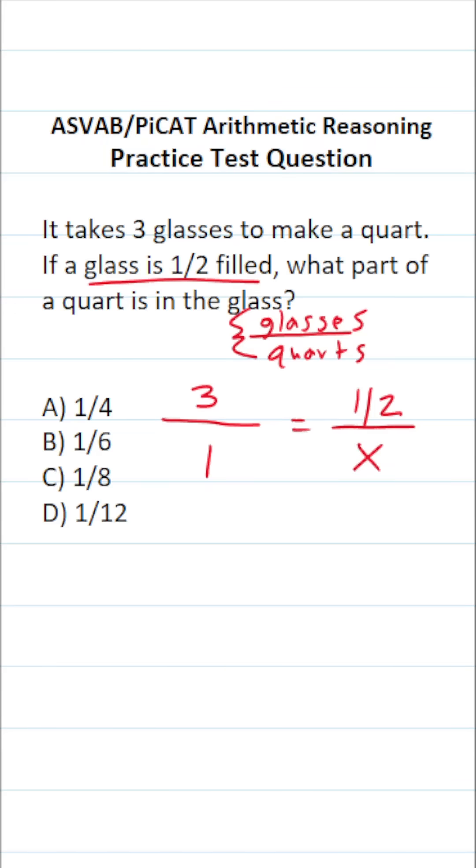We solve proportions via cross multiplication. This becomes three times x equals one times one half. Anything times one is itself, so this is just one half. To clear this three in front of this x, I'm going to multiply it by one third. I'm going to do that to both sides of this equation. Three times one third is just one, so this goes away, leaving you with x on this side.